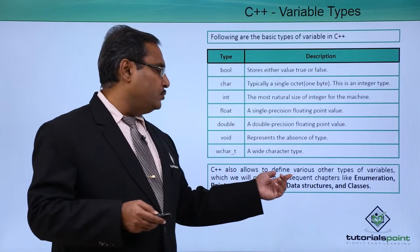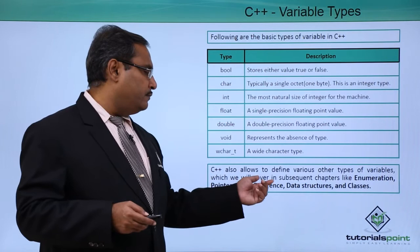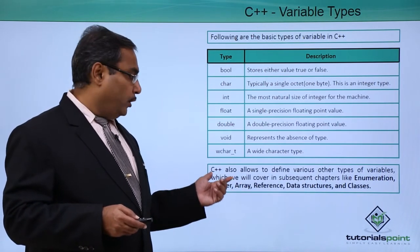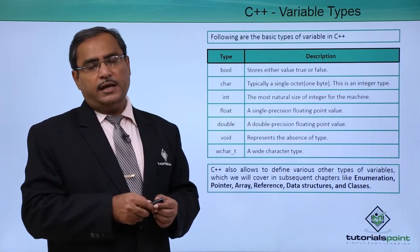C++ also allows to define various other types of variables which we will cover in the subsequent chapters like enumeration, pointer, array, reference, data structure and classes.